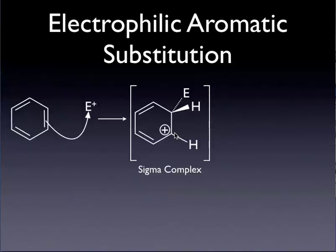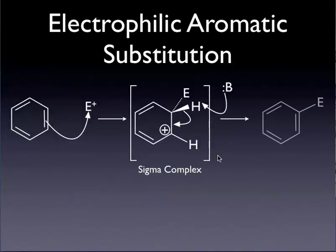We now have a situation where two things have gone horribly wrong for this benzene ring. First of all, we've disrupted its aromaticity. Secondly, we've created a carbocation. So both these situations are unfavorable. In the presence of base, we'll go on to eliminate a proton to regenerate our aromatic ring, but with our electrophile now substituted in place of the hydrogen.